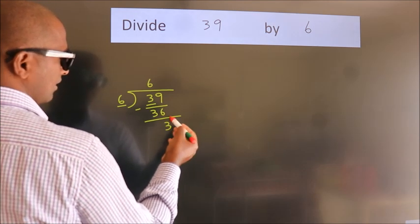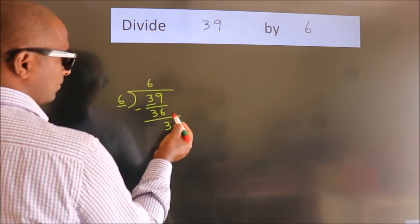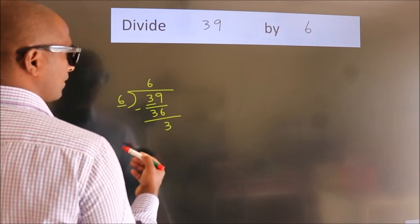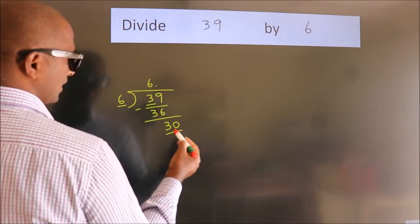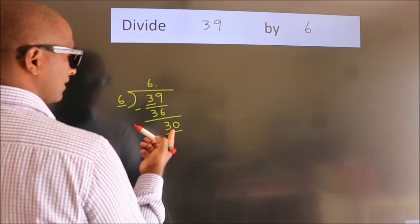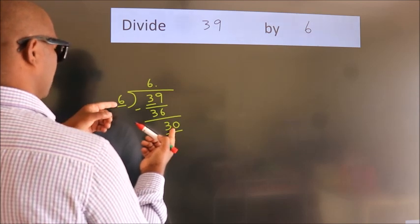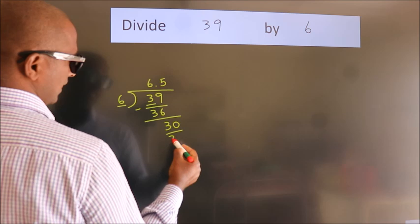After this, there are no more numbers to bring down. So what we do is put a dot and take 0. So 30. When do we get 30? In the 6 table, 6 times 5 is 30.